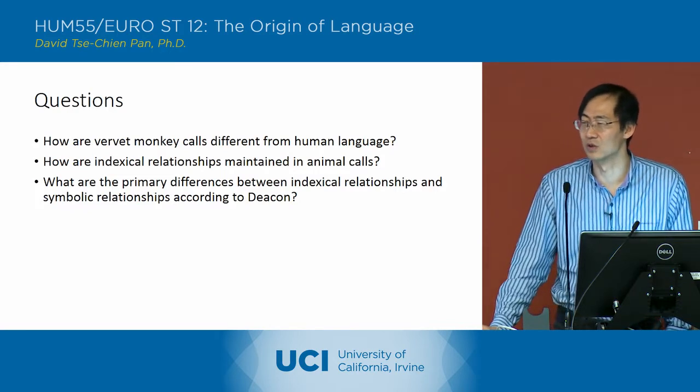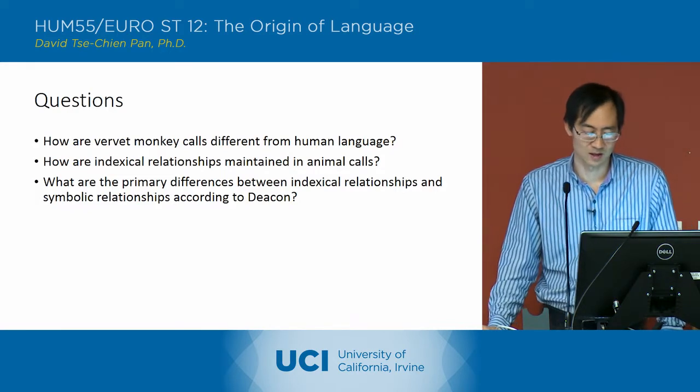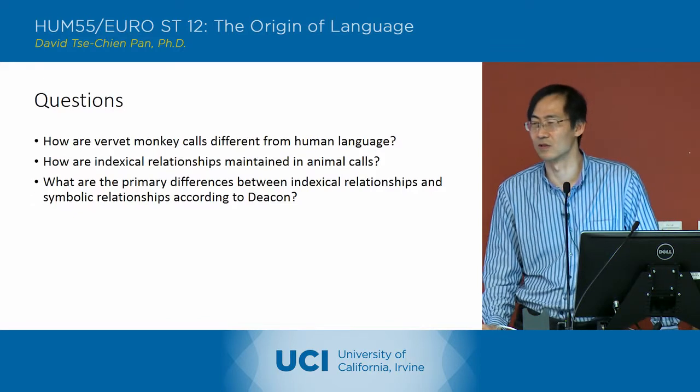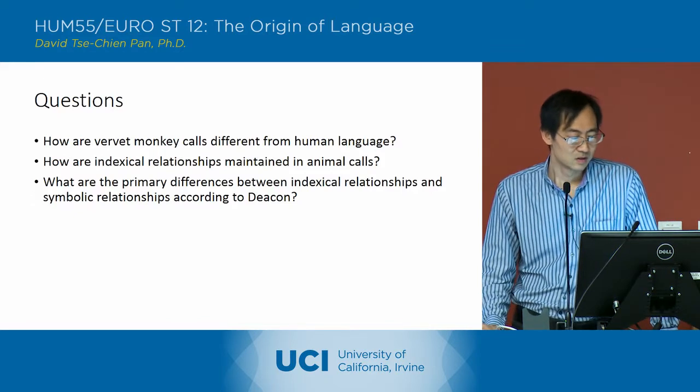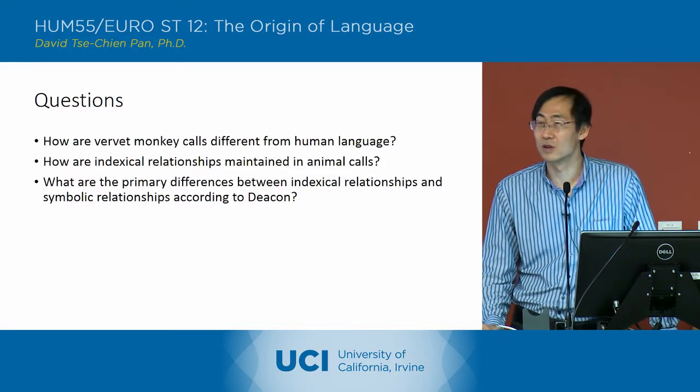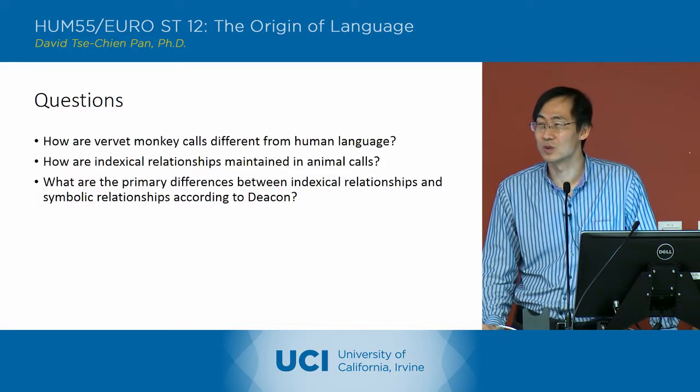Sign and object — S and O — that was what he had on the diagram. Other questions up to this point?